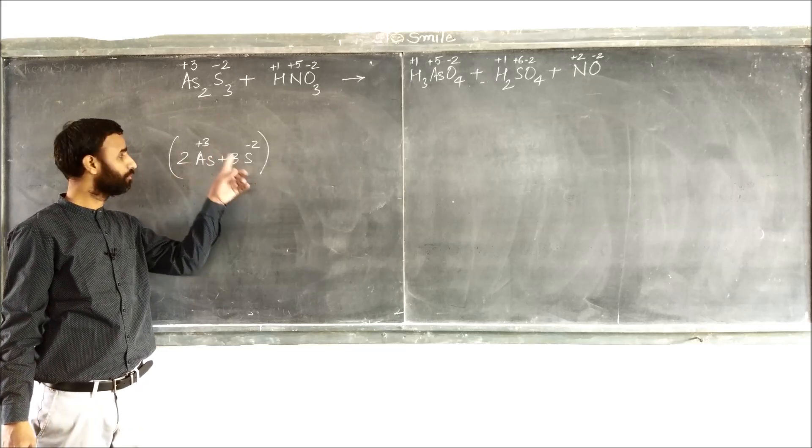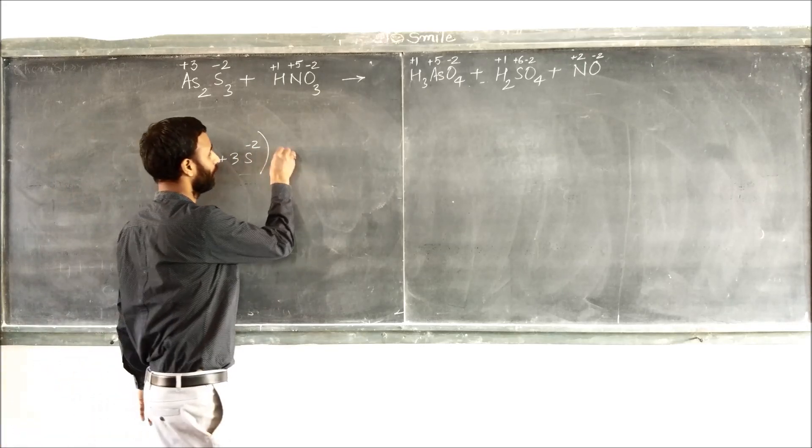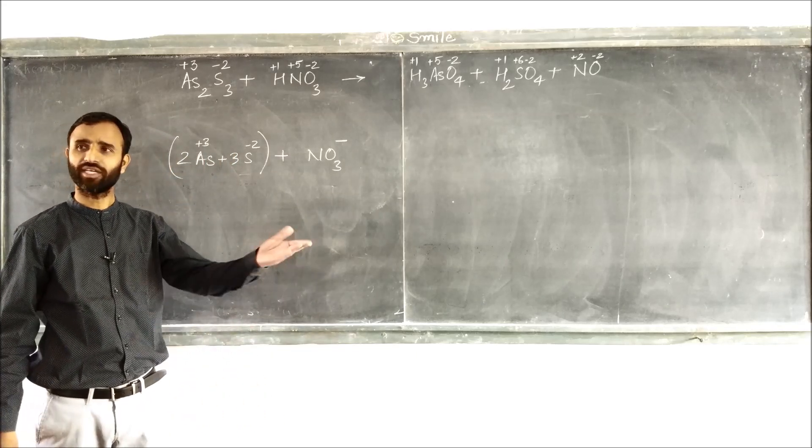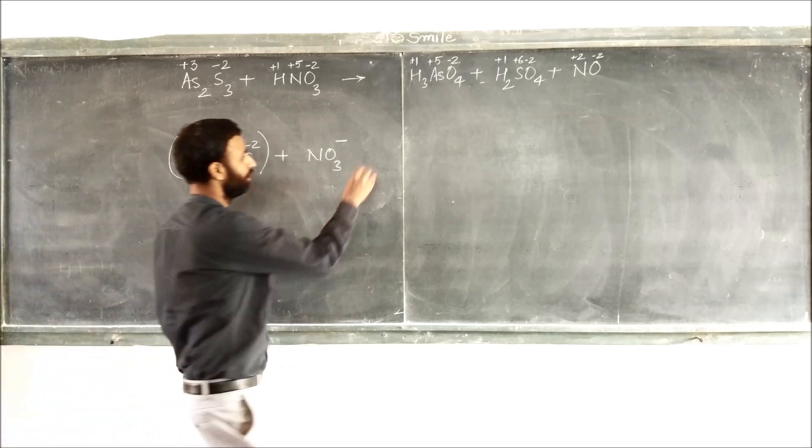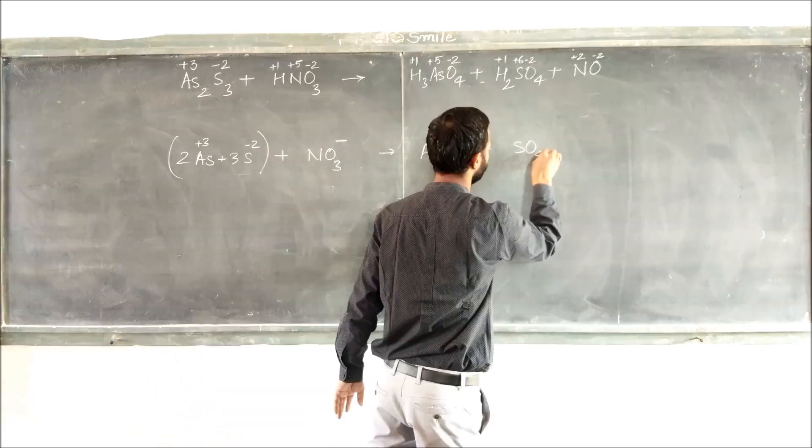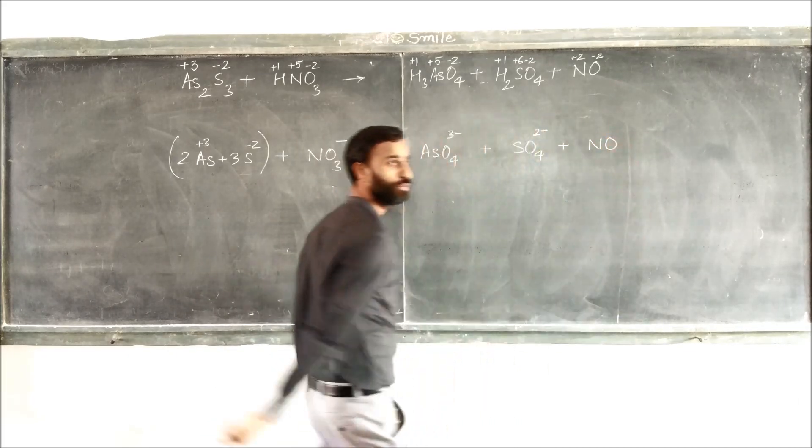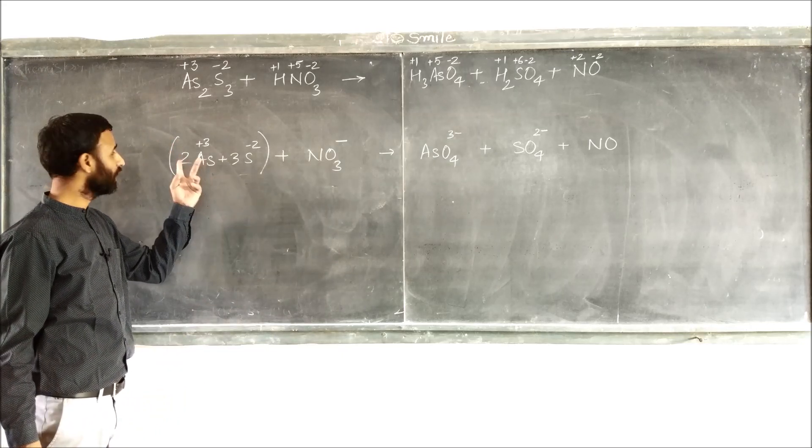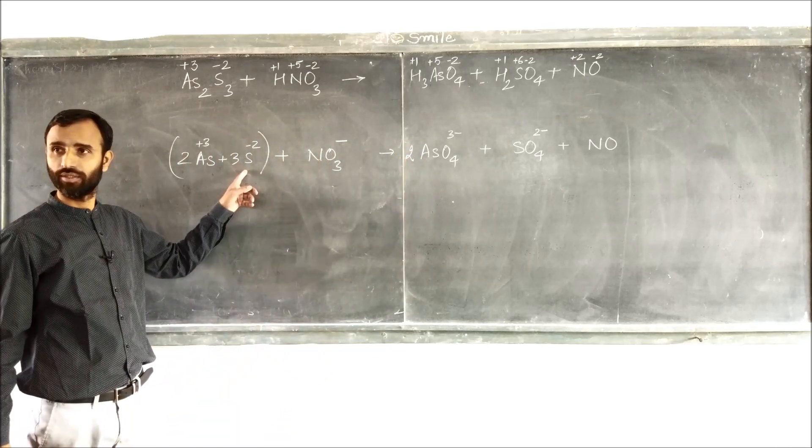So 2 As plus 3, 3 sulfur minus 2. Add HNO3, you can write it as NO3 minus. Make it an ionic equation and then change into molecular at the end. Here it is H3AsO4. Now first arsenic, how many arsenic are there? 2. Sulfur? 3.